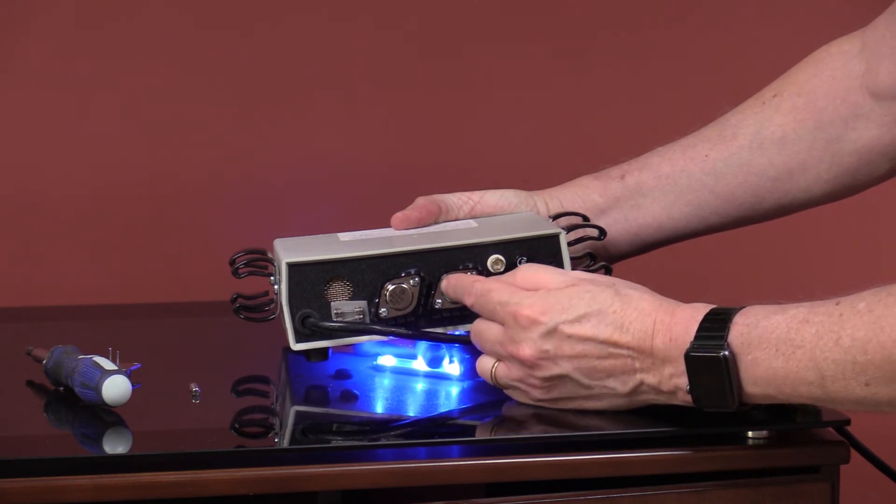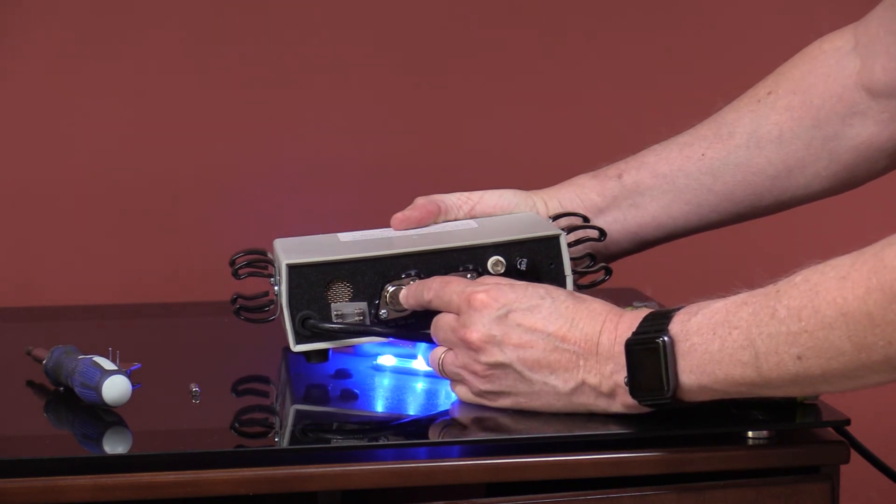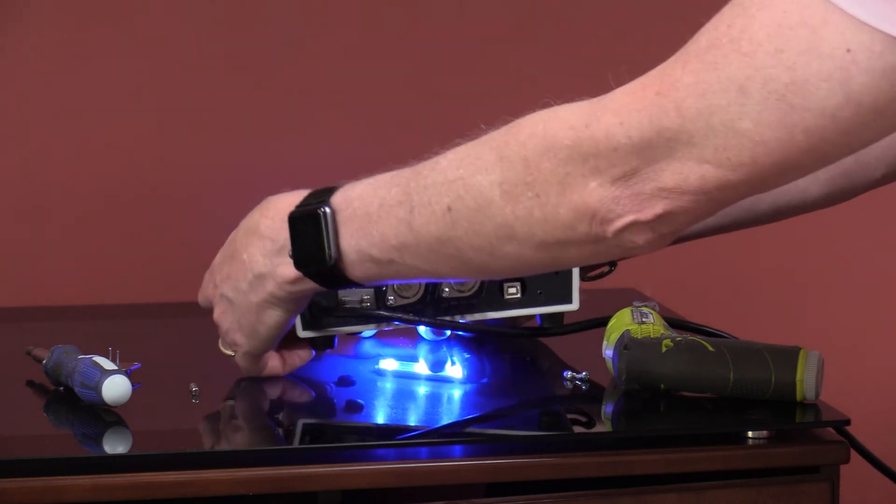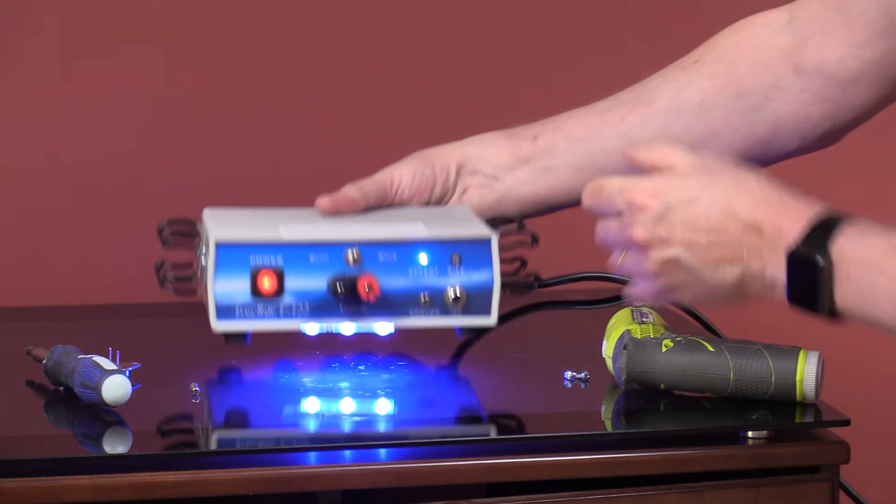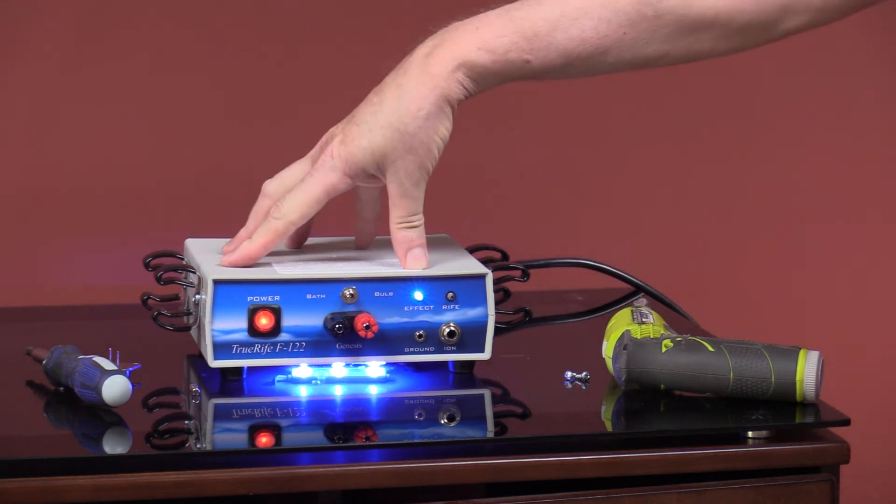And here again you'll see the empty holes on the back right here to put in your spare transistor. But once again, you start with this one, and if this one doesn't repair it, then you'll have to move to this transistor here. But most of the time on an F122, this is your problem if you have a blown transistor. So that completes this video on changing transistors.